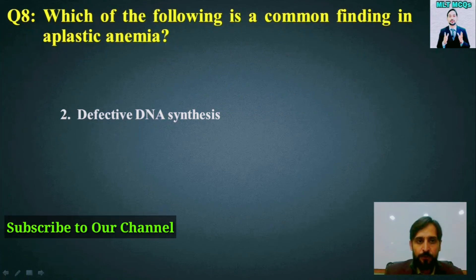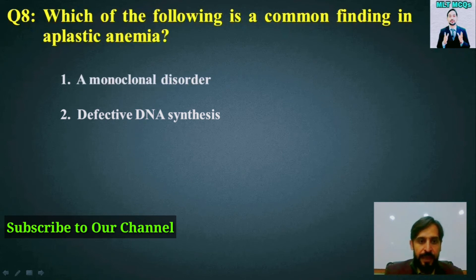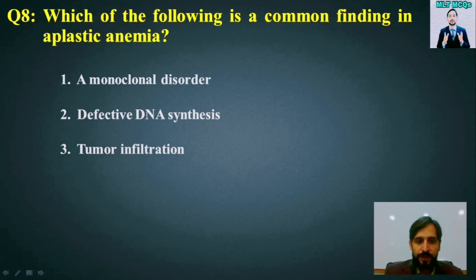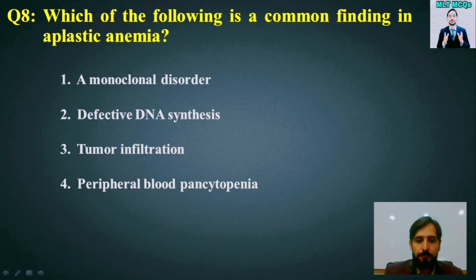MCQ number 8: Which of the following is a common finding in aplastic anemia? Options are: a monoclonal disorder, defective DNA synthesis, tumor infiltration, or peripheral blood pancytopenia. The right answer is option number 4 — peripheral blood pancytopenia.